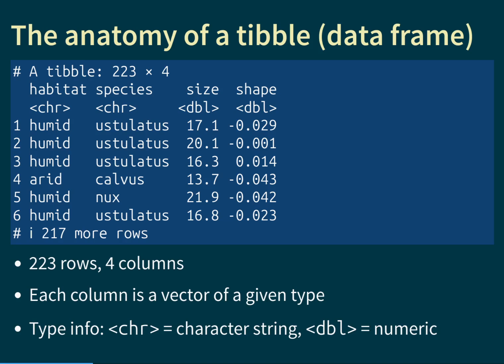Each column of the tibble can be conceived of as a vector, and the tibble itself can be thought of as many vectors glued together side by side. Each column has to be a vector, meaning entries within a column must have the same type — but entries across different columns do not. That is why it is perfectly legal to have two character string columns and two number columns in the same tibble.